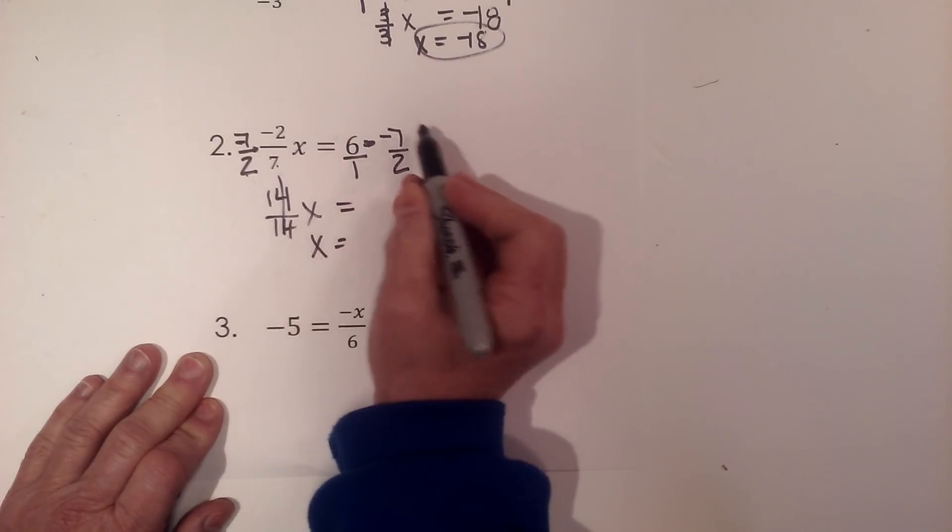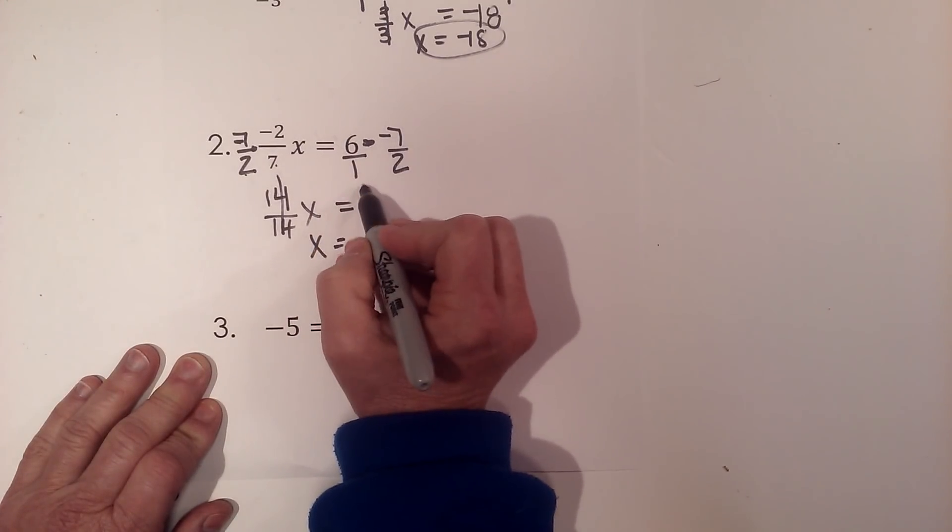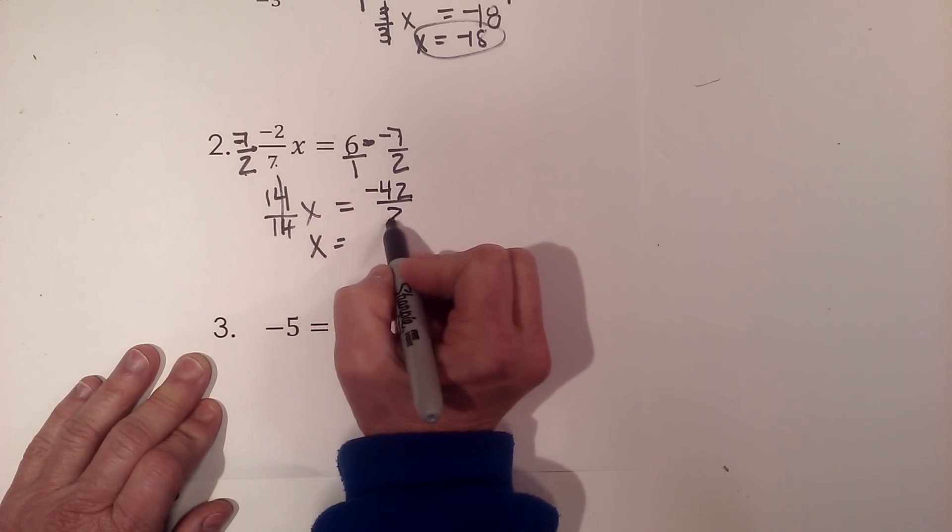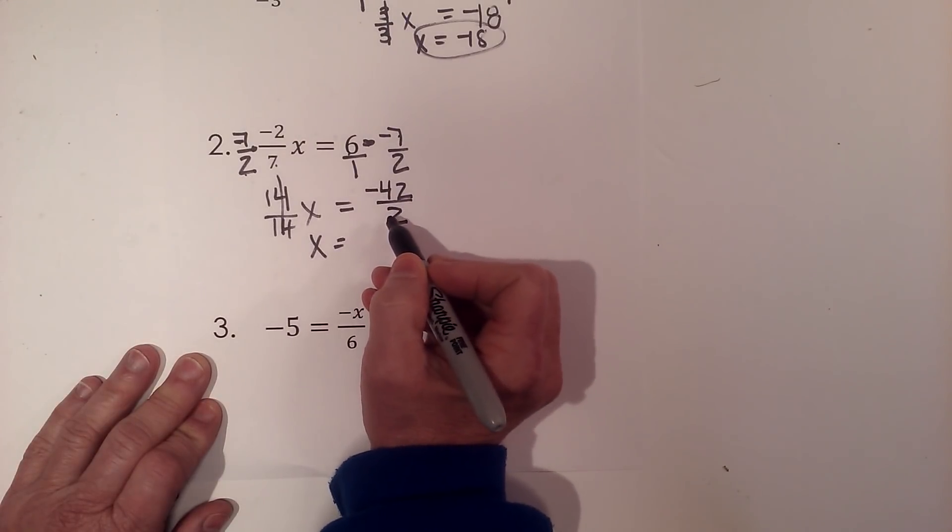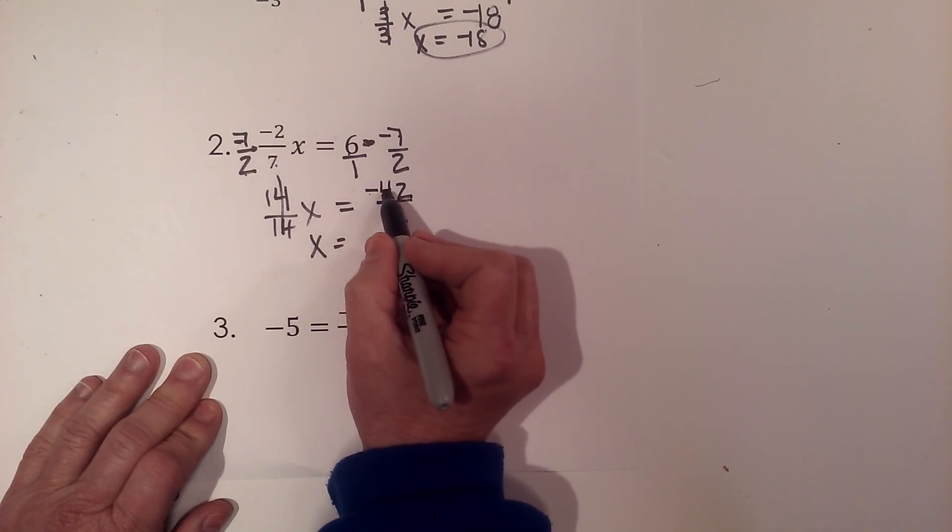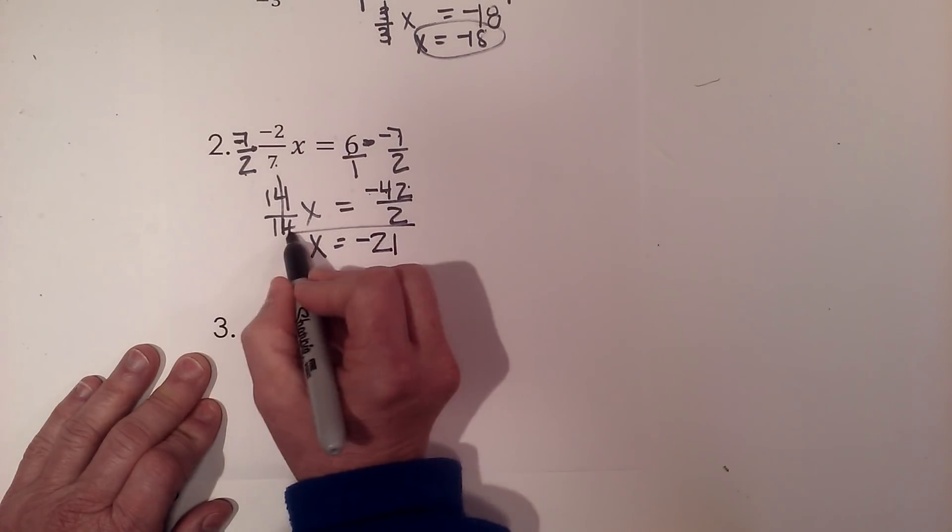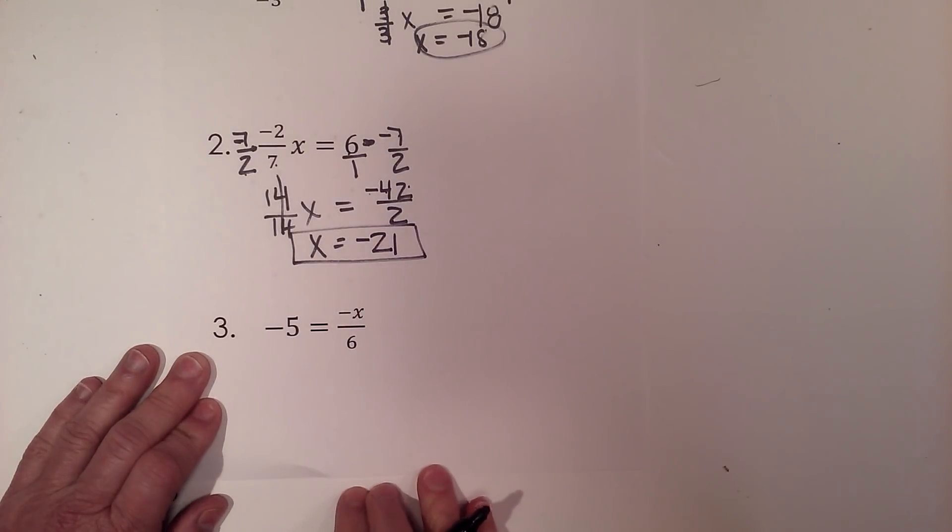On the other side I'm going to multiply the top together. Six times negative seven is negative forty-two. One times two is two. This is a division problem and I can simplify that. Negative forty-two divided by two is negative twenty-one. So x is negative twenty-one.